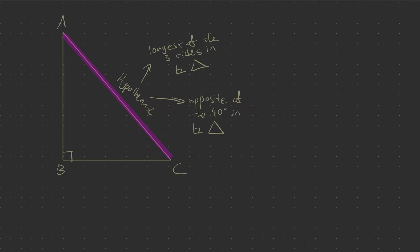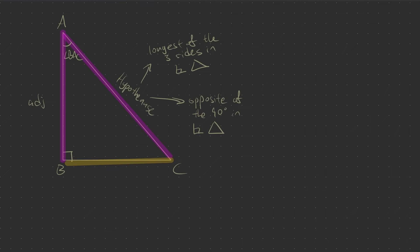So what do we call the two other sides? It depends on where we're viewing them from. So let's say I'm viewing them from angle BAC. The side which is directly beside me, we will call this the adjacent. And then the side which is directly opposite of the angle will be called the opposite. Pretty straightforward, right?